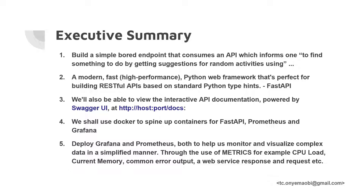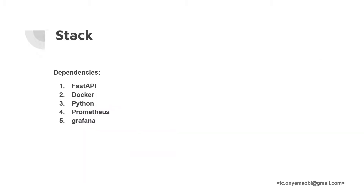A summary of what we'll be working through this section includes how to build a simple board endpoint that consumes an external API. I will deploy this using FastAPI, which is a modern, high-performance Python web framework that is perfect for building RESTful APIs based on Python standard hints. We will also be able to view interactive API documentation powered by Swagger UI. We shall use Docker to spin up containers for FastAPI, Prometheus, and Grafana, and we will deploy Grafana and Prometheus for continuous data visualization to help us monitor and visualize complex data in a simplified manner.